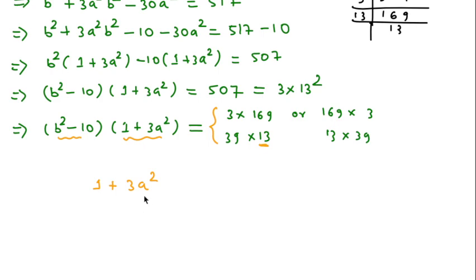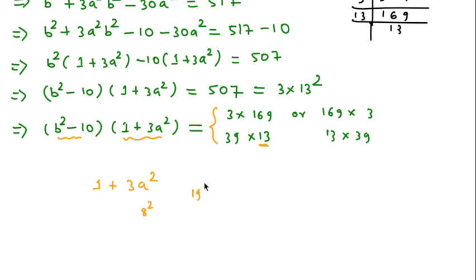Continuing: for a = 6, 1 + 3(36) = 109 — no. For a = 7, 1 + 3(49) = 148 — no. For a = 8, 1 + 3(64) = 193, which is already greater than 169. So the values 109 and 148 don't match, and beyond a = 8 the expression exceeds our factors.